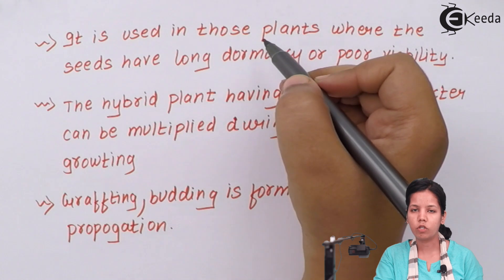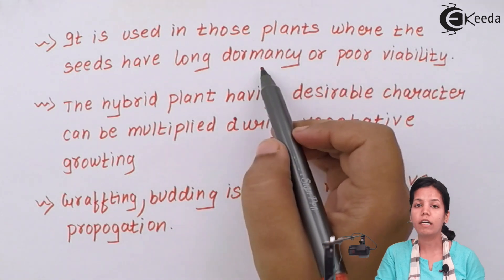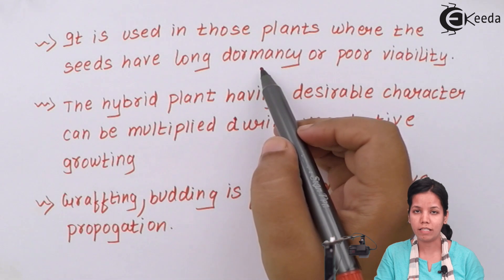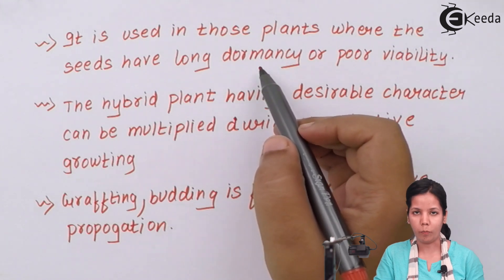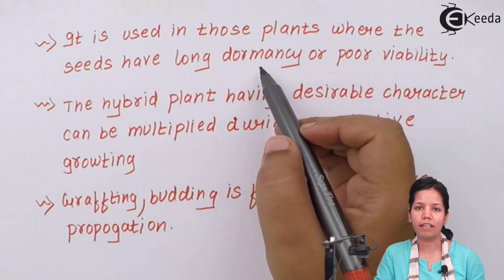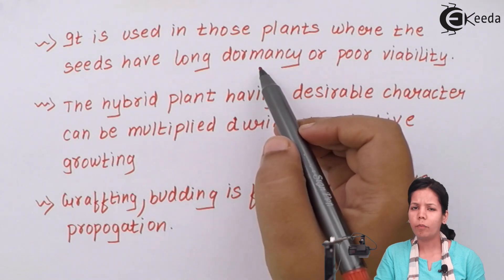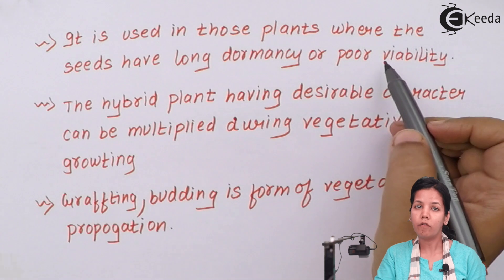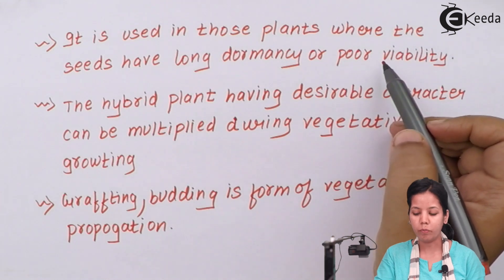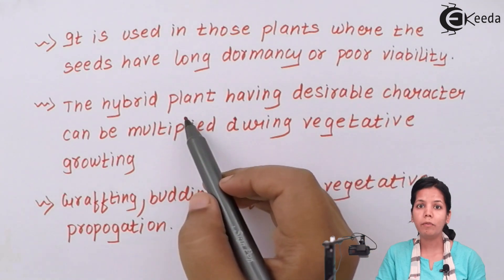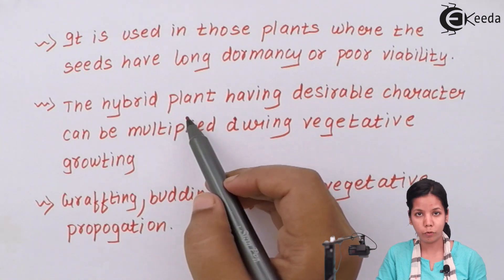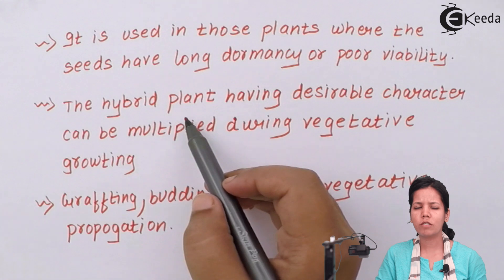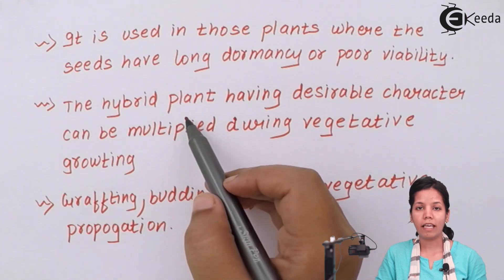Vegetative propagation is widely used in those plants which have longer dormancy, meaning the plant is not able to grow properly, cannot produce a radicle, or cannot develop into a proper plant. Poor viability of seeds is also a reason for vegetative propagation. Hybrid plants — wherever you mix two different plants or cut and mix two different root stems — a hybrid plant which is a mixture of two different plants can be obtained through vegetative propagation.